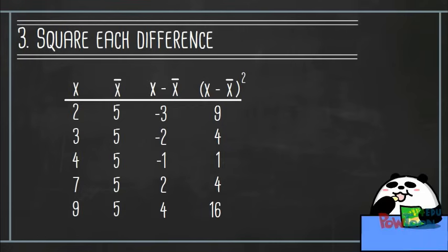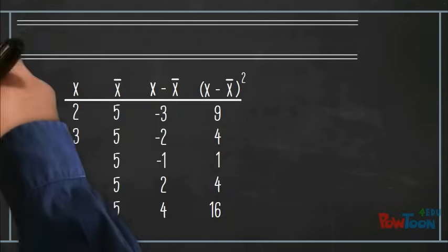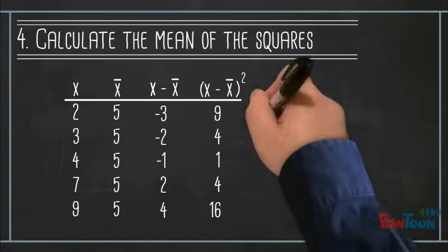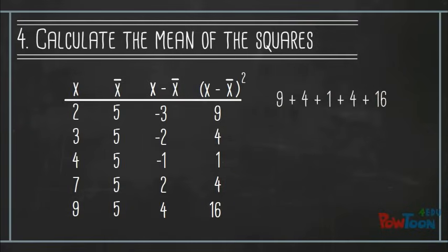The fourth step is to calculate the mean of the squared differences. 9 plus 4 plus 1 plus 4 plus 16 divided by 5 equals 6.8.